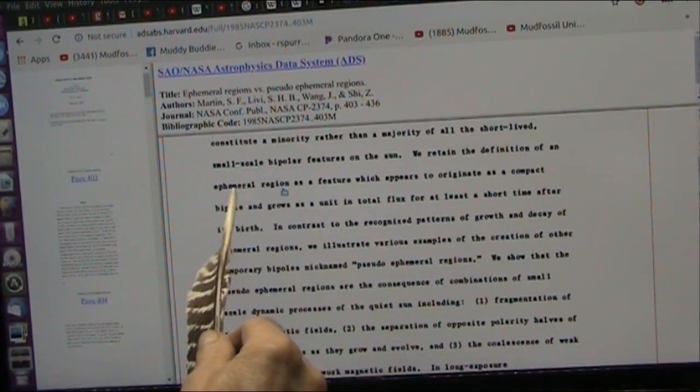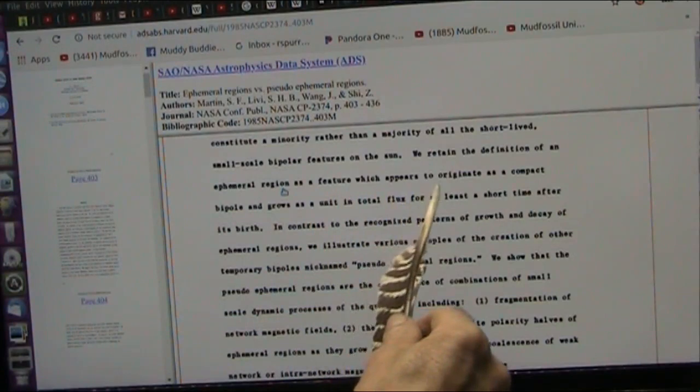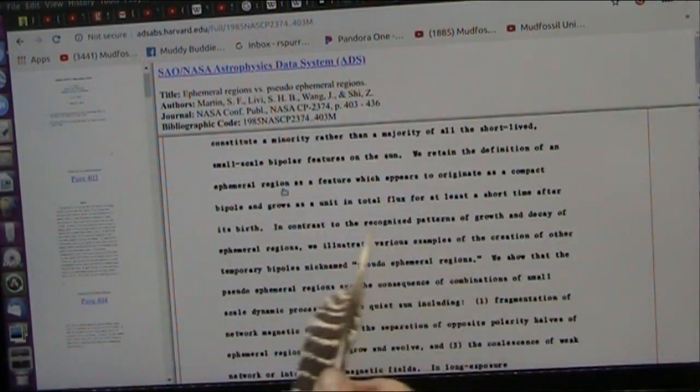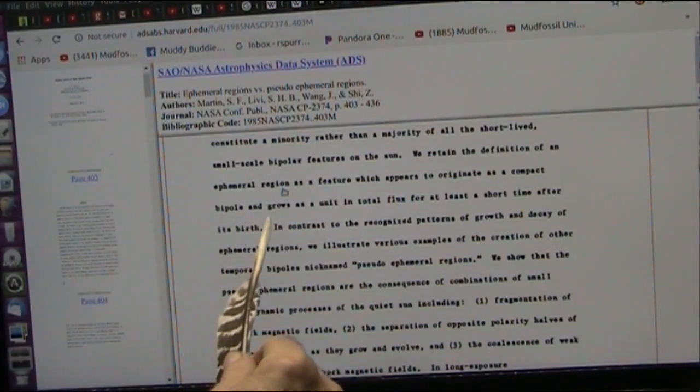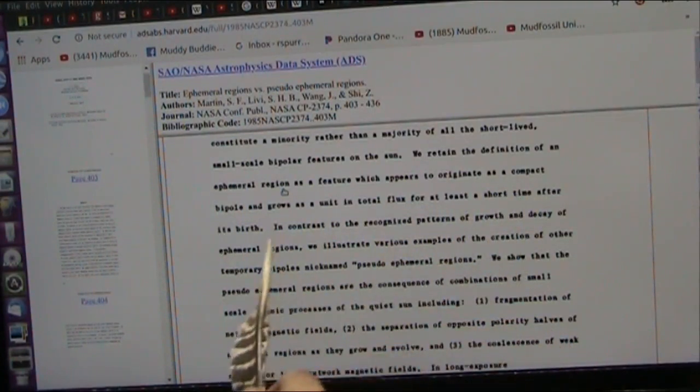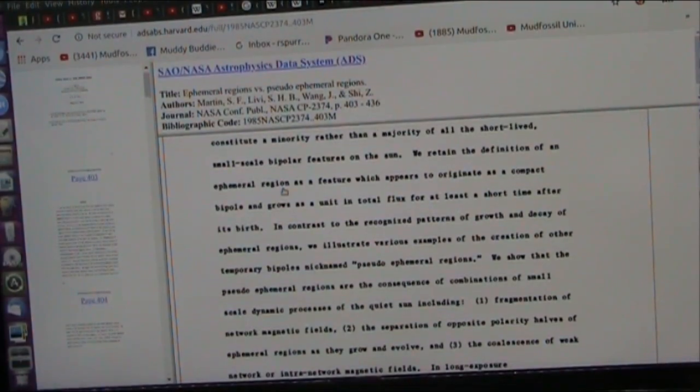Okay my friends, this is where it really gets tricky. They retain the definition of an ephemeral region which is out right outside the Sun as a feature which appears to originate as a compact bi-pole. We call them dipoles. Now it's a positive negative and grows as a unit in total flux for a short time after its birth. Now then it goes down to say the fragmentation of these network magnetic fields, separation of opposite polarities, halves of effort as they grow and evolve. Very very hard to comprehend what's going on here.